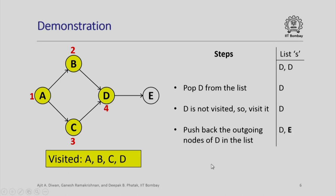Now, we follow the same steps. The list contains D and D. We pop D from the list. Although both are same, but just remember that it is a queue, therefore, this D is going to be popped out which is the front of the queue. The list still contains a D. Now, since D is not visited, we visit it. What do we find when we visit D? D has an outgoing edge to E and therefore, the outgoing node E will be pushed onto the list. The visited order is A, B, C and D and my list contains D and E now.